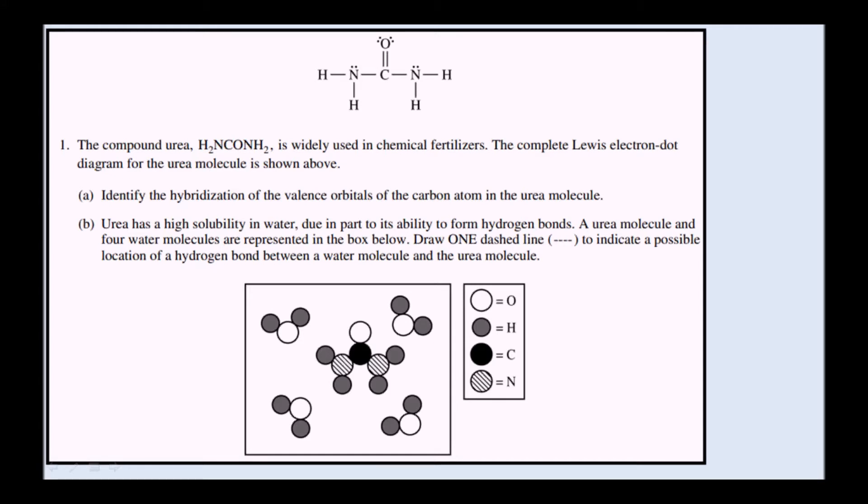For hybridization, we're going to use VSEPR theory. The carbon atom in the center of the urea molecule has four bonds in three bonding directions, so there are three atoms bonded to the central carbon.